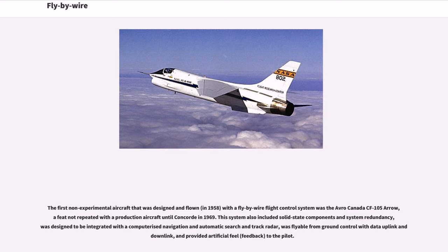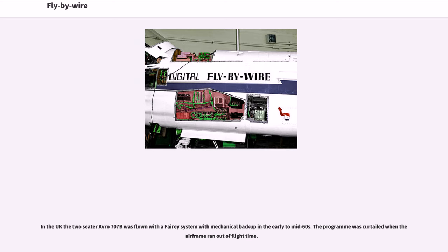The CF-105 Arrow's system included solid state components and system redundancy, was designed to be integrated with a computerized navigation and automatic search and track radar, was flyable from ground control with data uplink and downlink, and provided artificial feel feedback to the pilot. In the UK, the two-seater Avro 707B was flown with a fly-by-wire system with mechanical backup in the early to mid-1960s, but the program was curtailed when the airframe ran out of flight time.